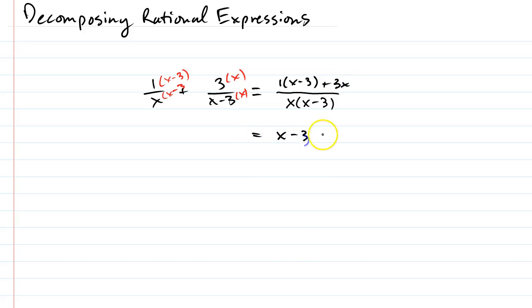This is really x minus 3 plus 3x on top, and so this is going to turn out to be 4x minus 3 all over x times x minus 3. And so, we are used to going this way.